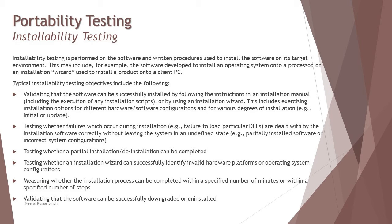The first sub-characteristic in detail is installability. Installability testing is performed on the software and written procedures used to install the software on its target environment. From a user perspective, you just click next-next-next and it gets installed. But sometimes you may encounter a failure saying you do not have the required version of DirectX, Visual Studio, or some prerequisite — and that's what we check as part of installability.